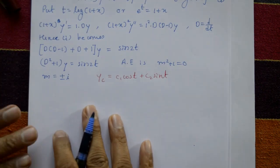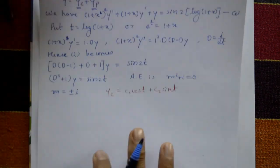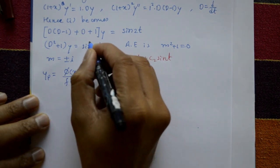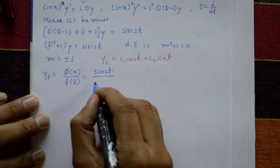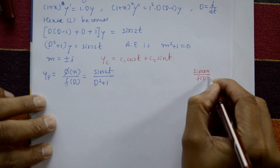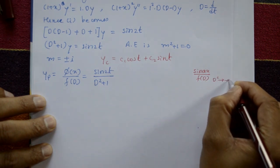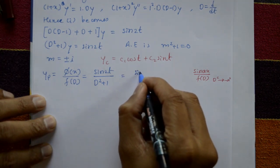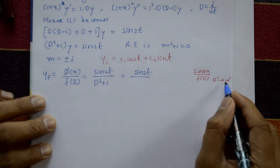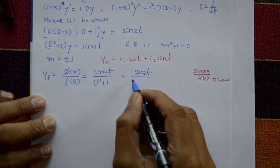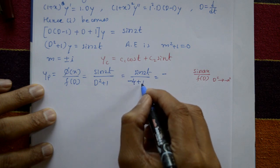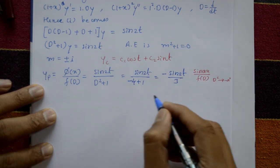Now go to the particular integral — the second step. The particular integral yp = φ(x) / f(D) = sin 2t / (D² + 1). Using Type 2, where sin(ax) / f(D²) uses D² = −a². Here a = 2, so D² = −4. Substituting: sin 2t / (−4 + 1) = sin 2t / (−3) = −sin 2t / 3. This is the particular integral.